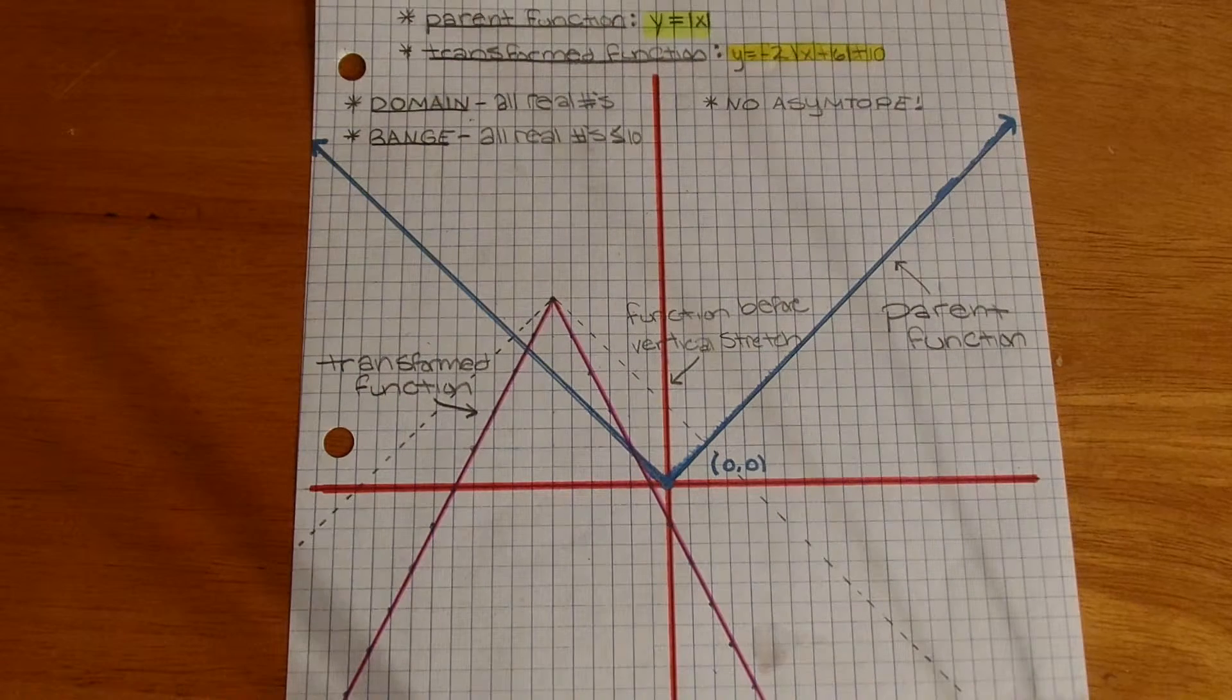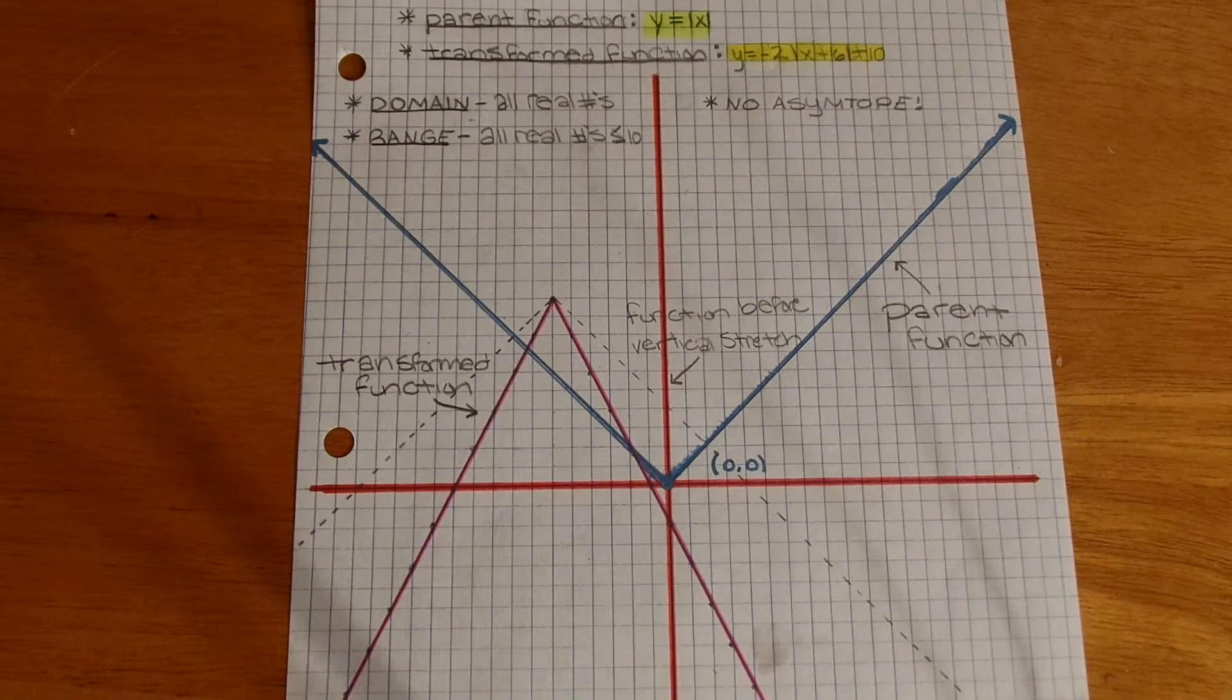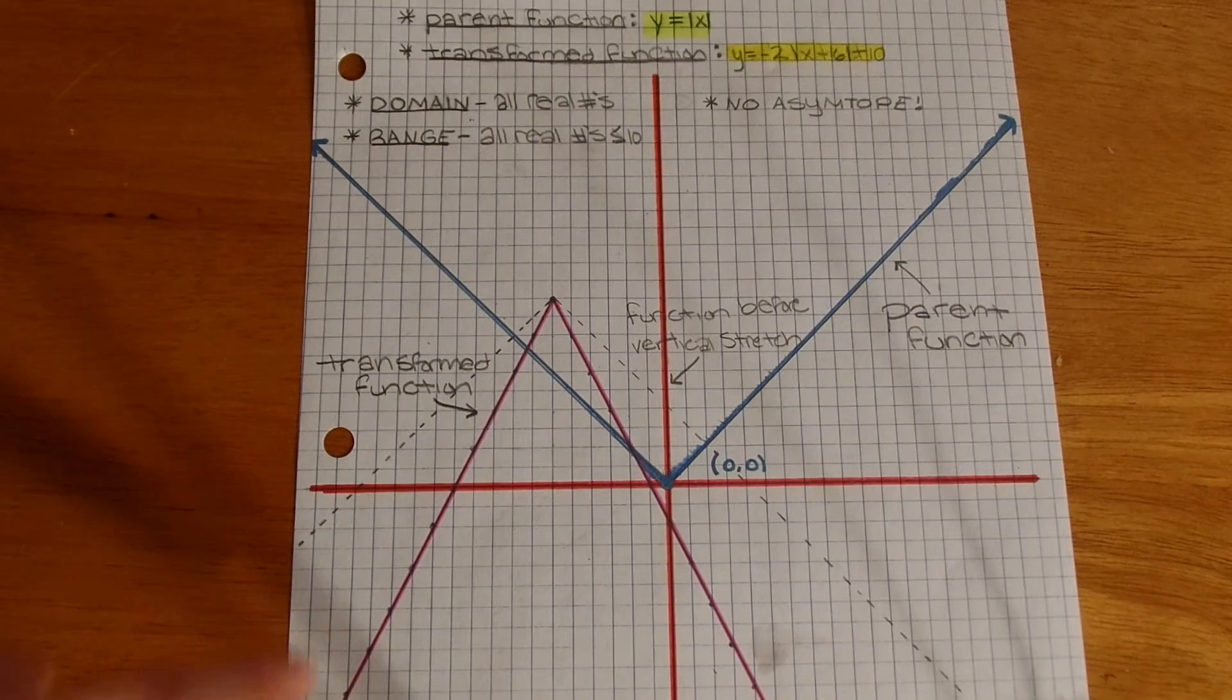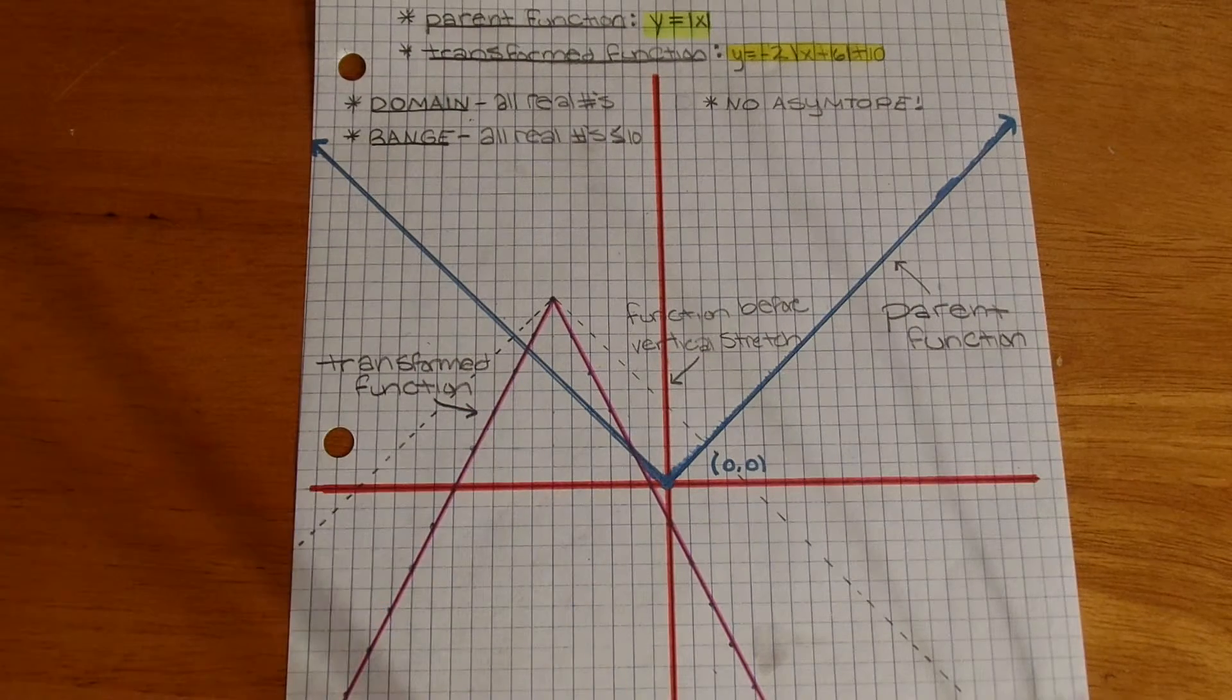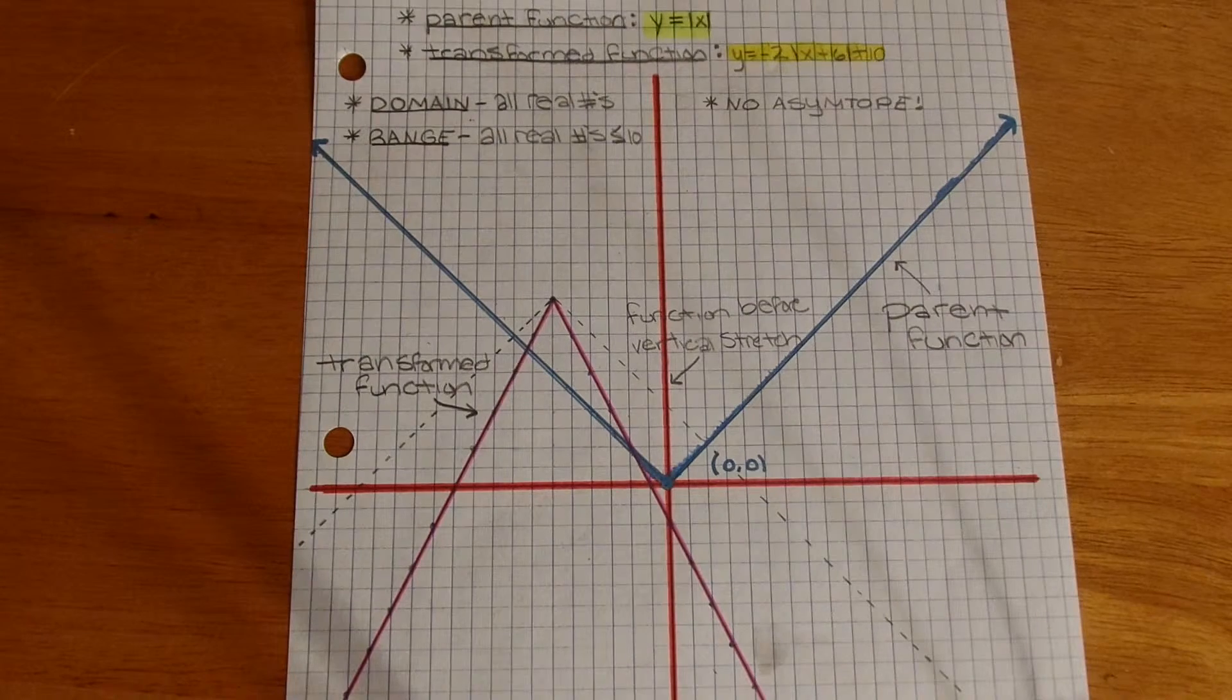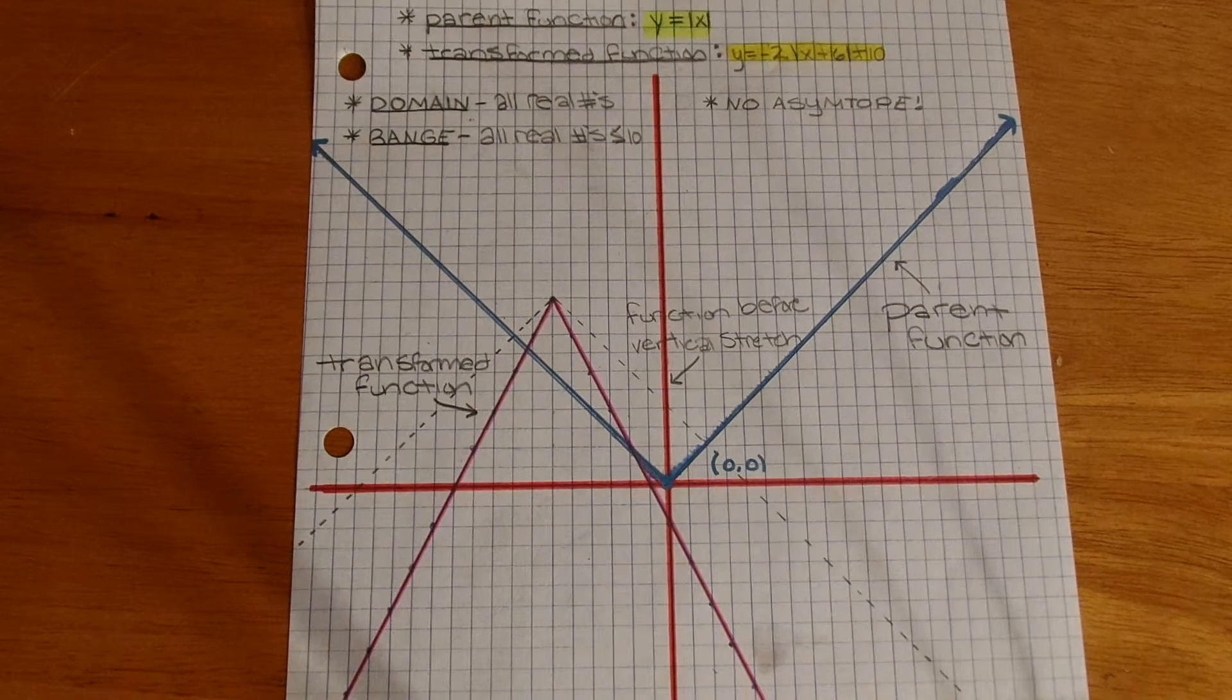The dotted line, like I said before, represents the function before the stretch, and the solid pink line here is the transform function.